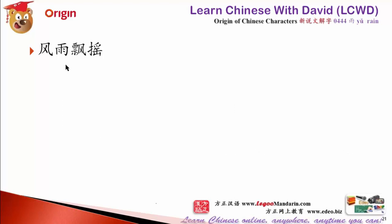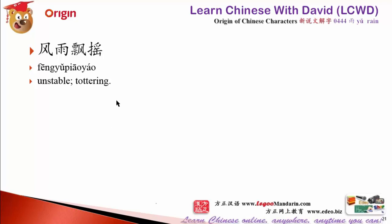风雨飘摇 — 风 is wind, 雨 is rain, 飘 means floating, 摇 means shaking. Imagine something shaking and unstable. 风雨飘摇 means tottering — it describes a kingdom going to collapse, or even a company in big trouble, facing instability.